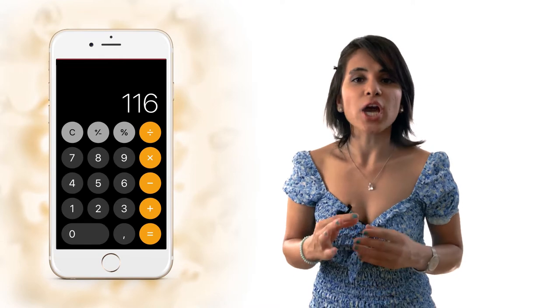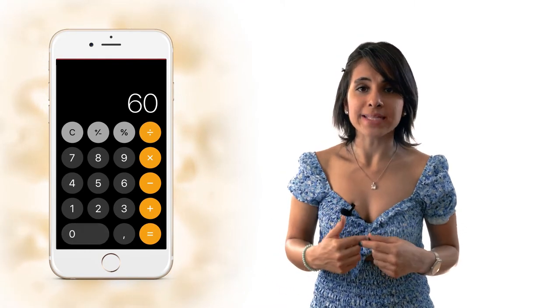If I want to use imperial unit system to calculate it, my weight is 116 pounds and I divide it by my height which is 60 inches, then once more divided by my height, and finally multiply the number by 703.